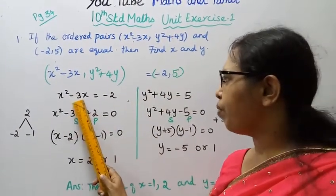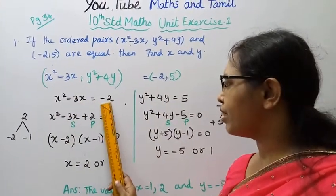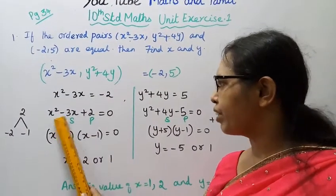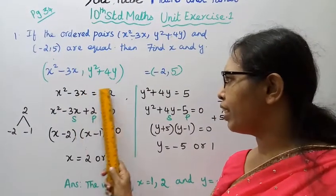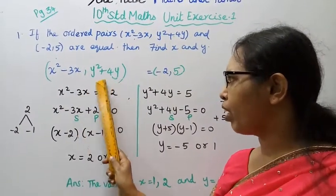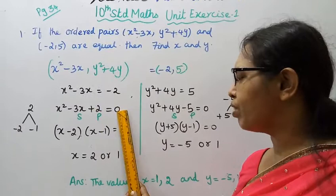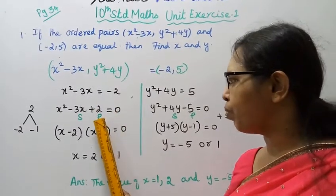x²-3x is equal to -2. Rearranging: x²-3x+2 is equal to 0. Now we factorize, setting this equal to 0.